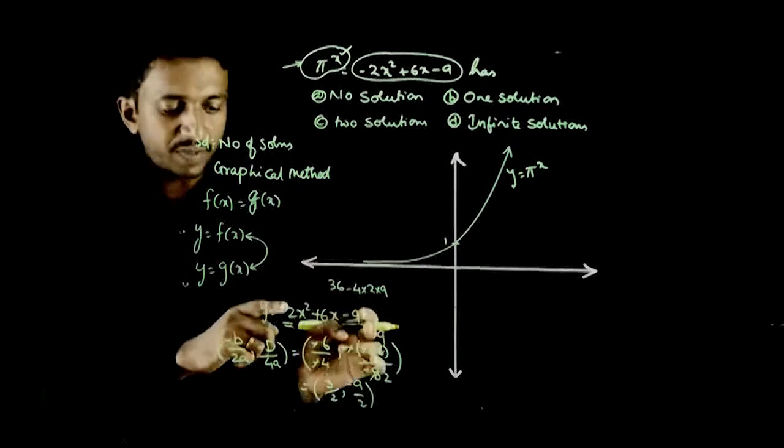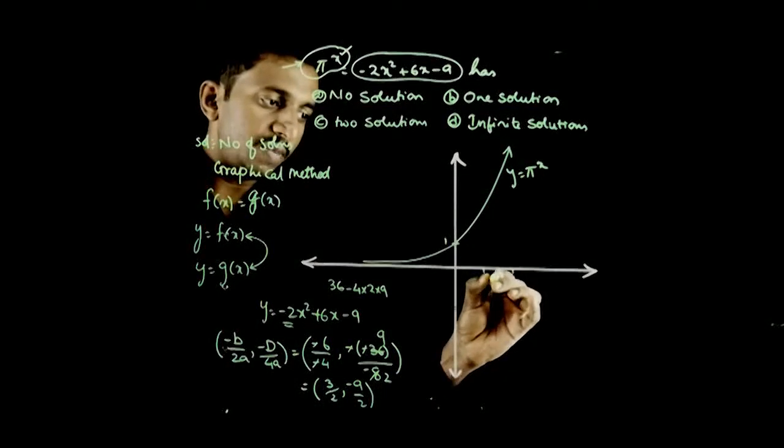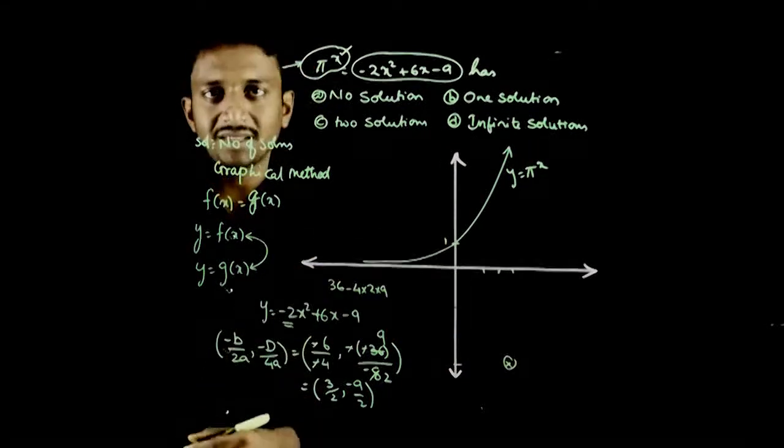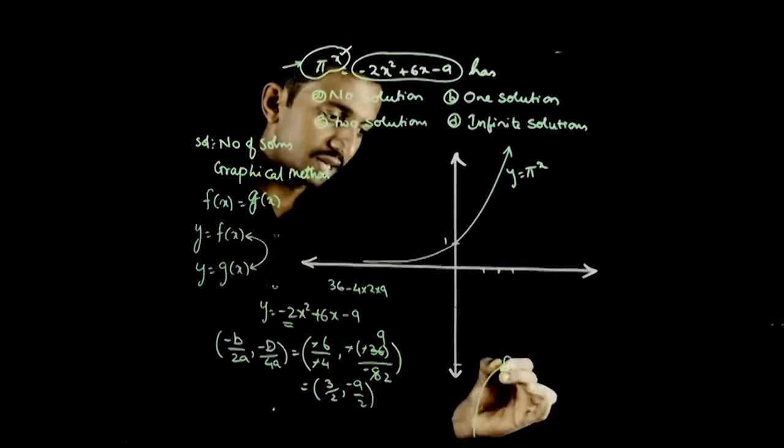So the vertex of this parabola is (3/2, -9/2). So this is 1 and this is 2. 3/2, -9/2. So you have the vertex somewhere here. And the graph is a downward parabola. So the graph looks like this.